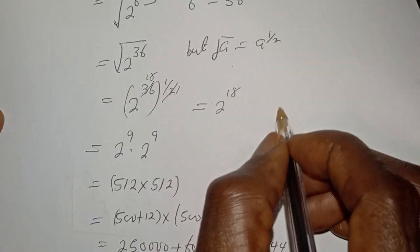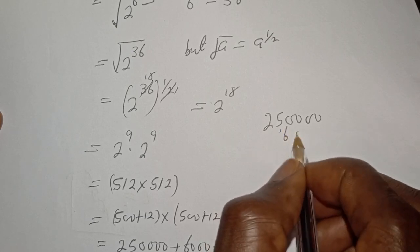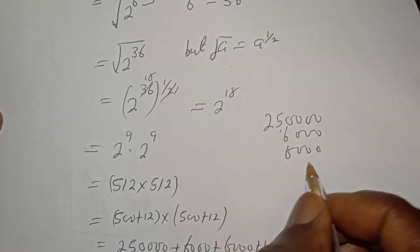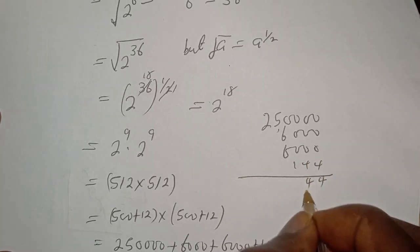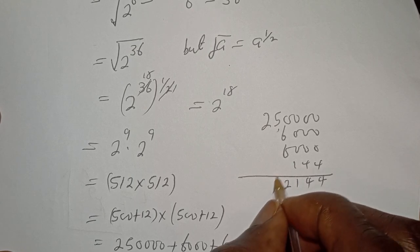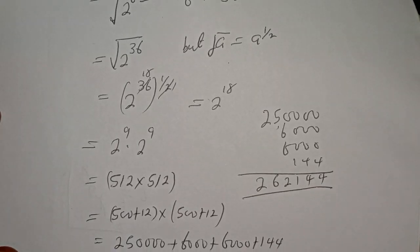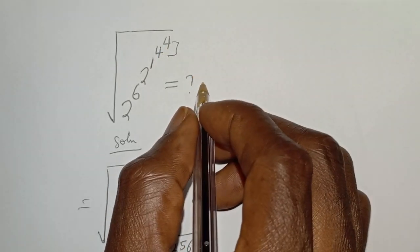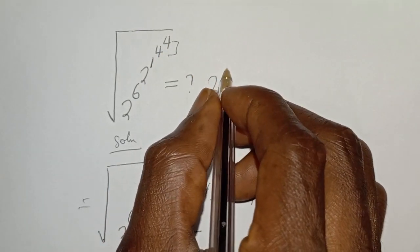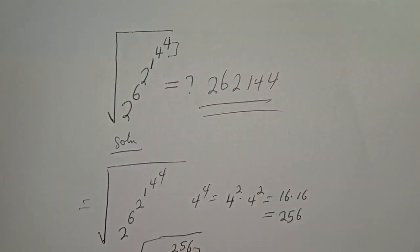Adding everything together: 250,000 plus 6,000 plus 6,000 plus 144 gives us 262,144. This is the final answer. Therefore, the square root of 2 raised to power 6, raised to power 2, raised to power 1, raised to power 4, raised to power 4 is equal to 262,144. Thank you for watching — don't forget to like, share, comment, and subscribe. Bye bye!